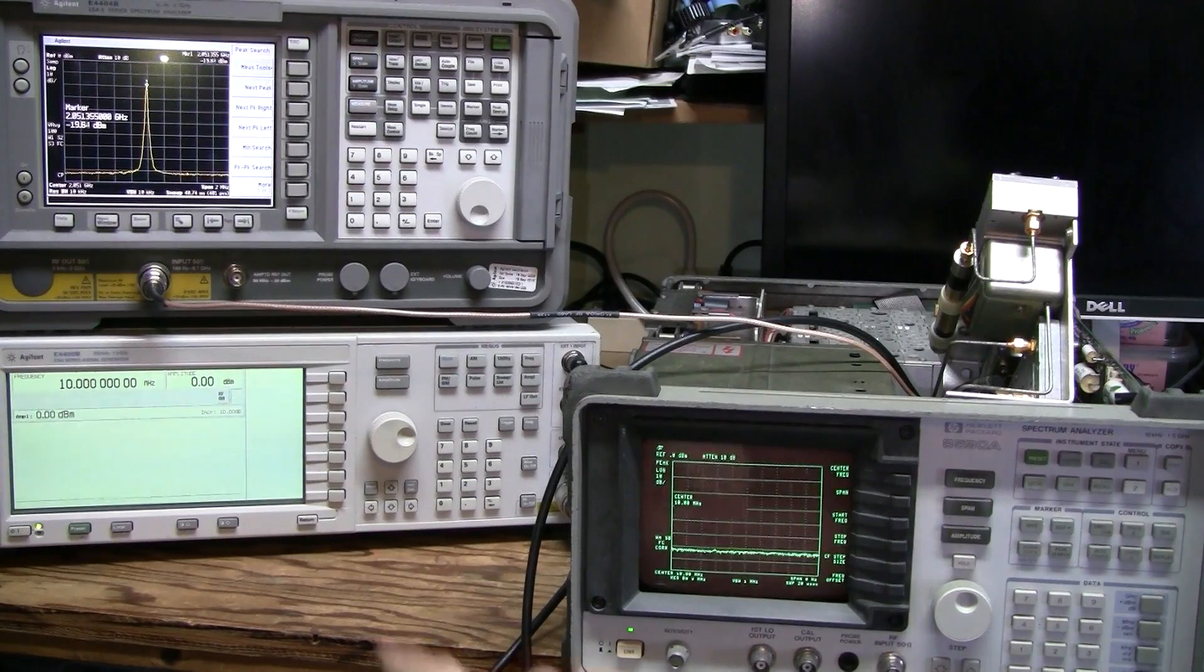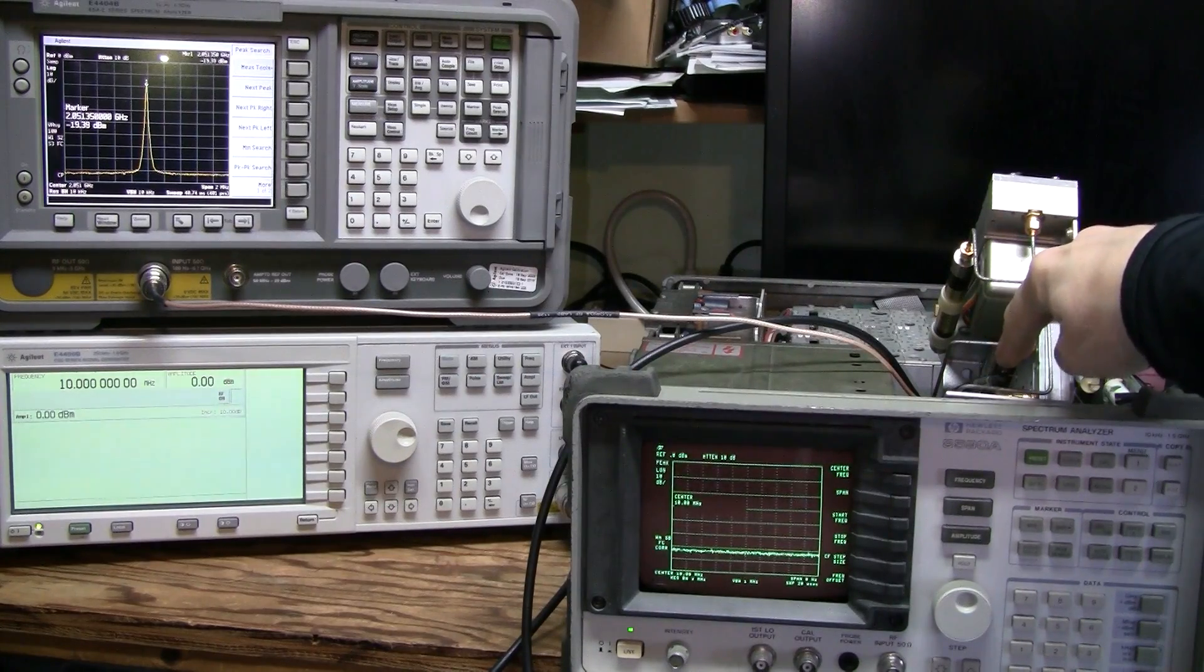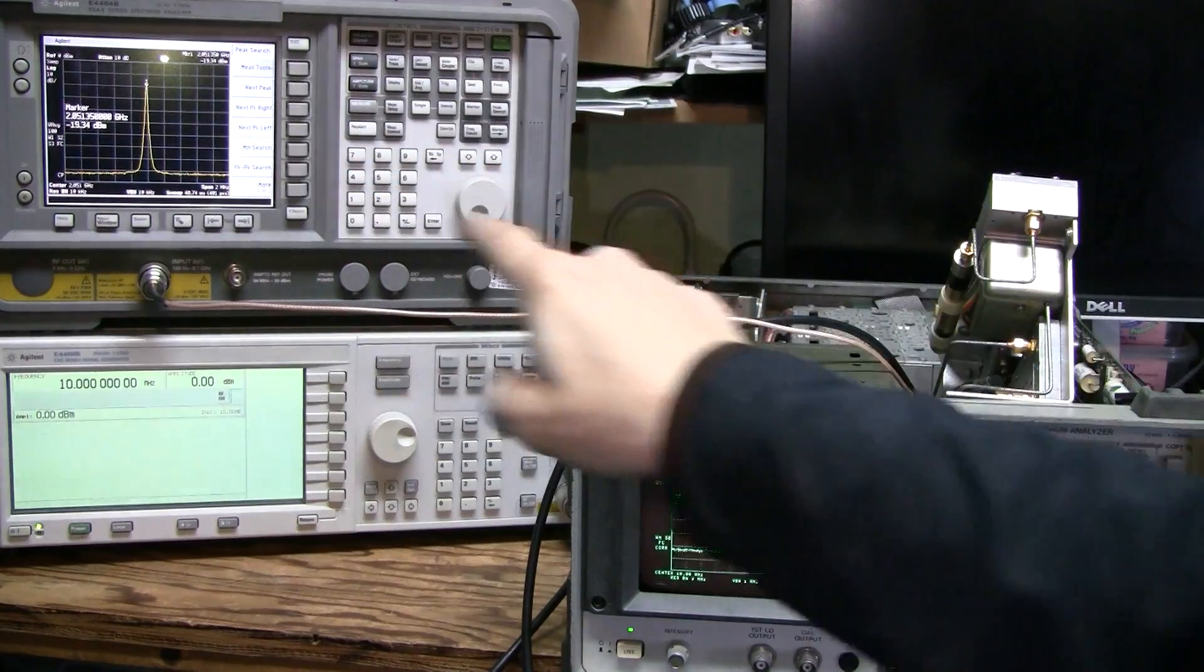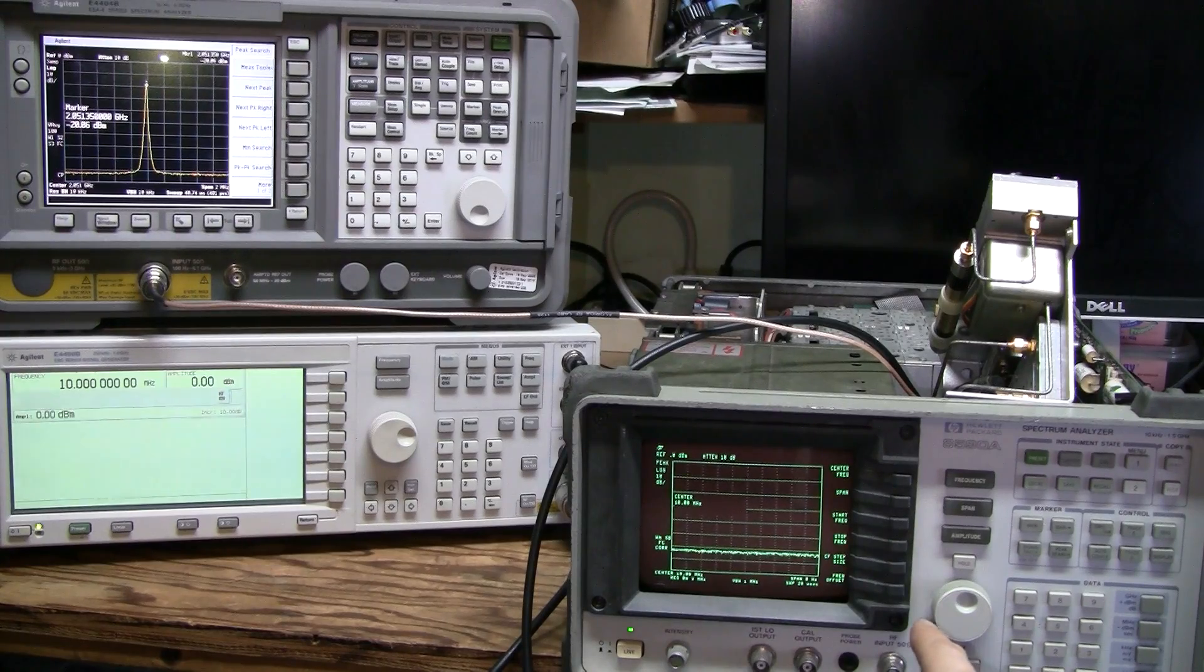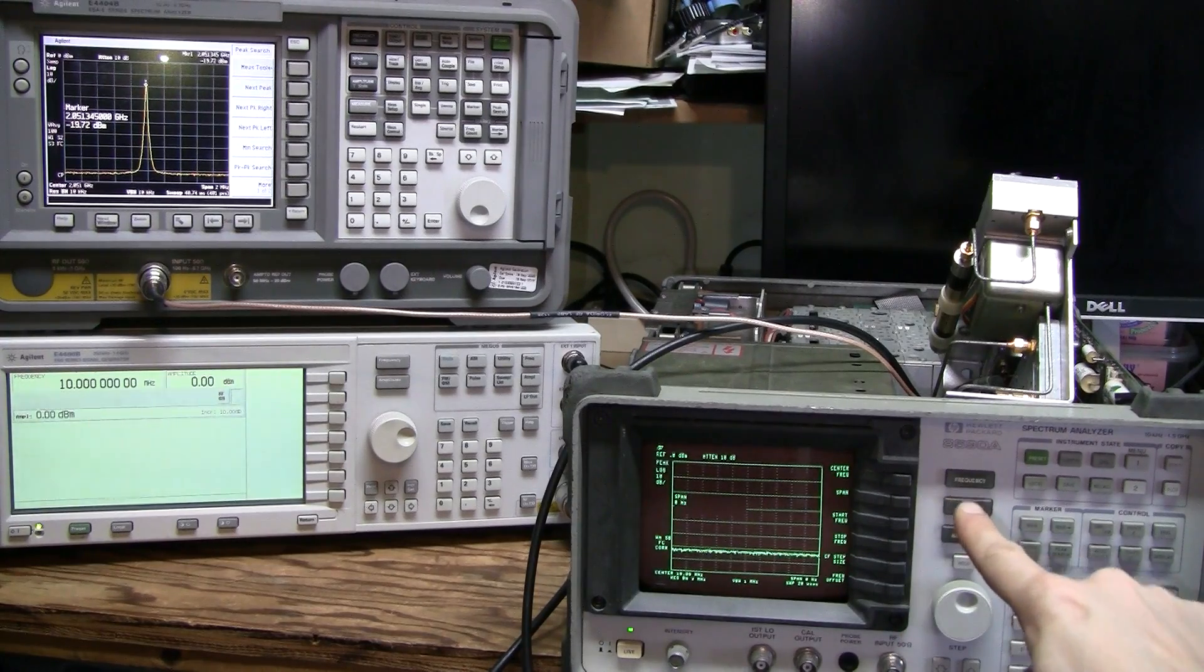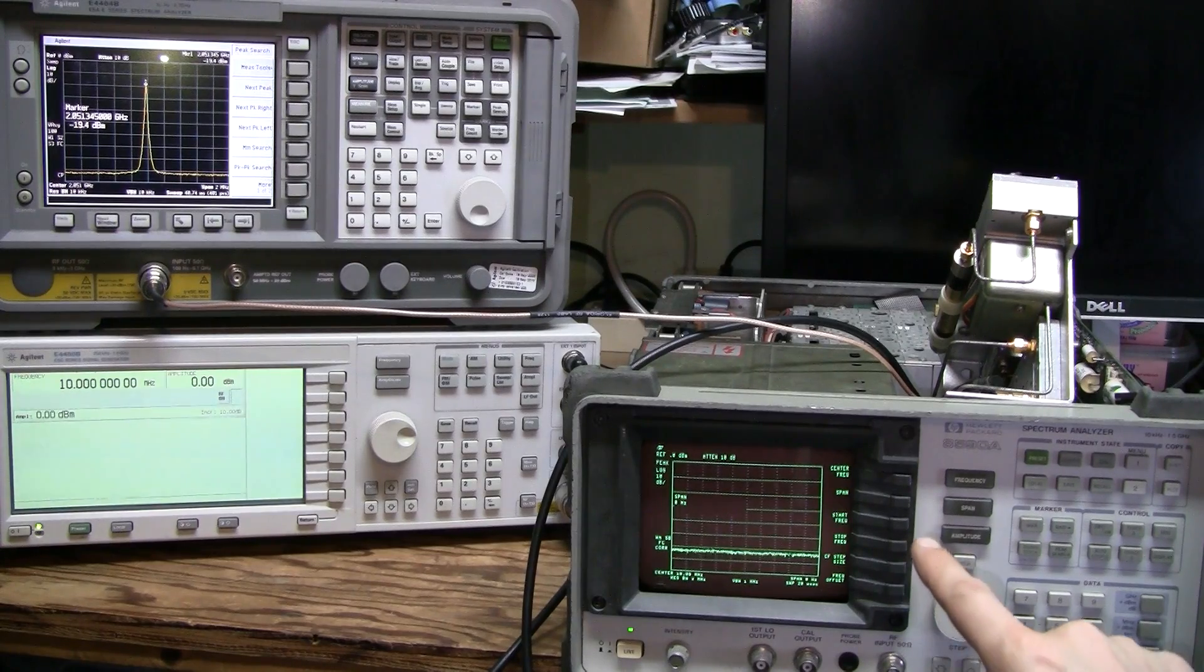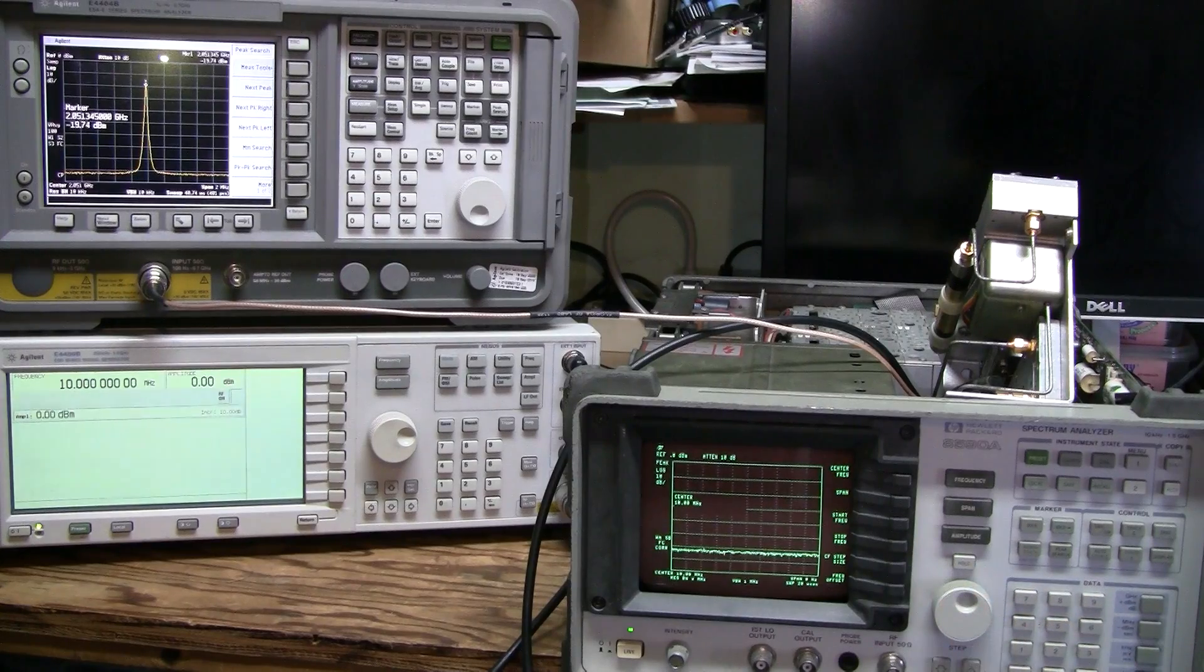So here I connected this signal generator directly to the input of the first converter and this analyzer directly to its output. And here I can tune the LO. I set the zero span which stops sweeping the LO. It stays at one frequency and I can set the center frequency here.